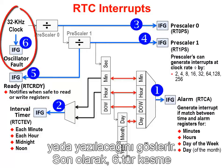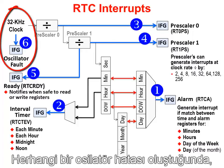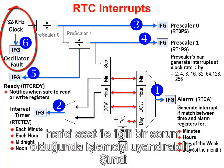The sixth type of interrupt is for an oscillator fault. On devices that allow the RTC to run in LPM 3.5 mode, the CPU would not be able to directly detect that an oscillator fault occurred. Therefore, this RTC interrupt can wake the CPU if something's gone wrong with the external clock.